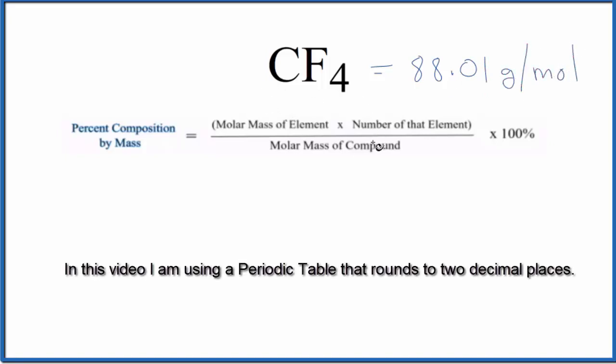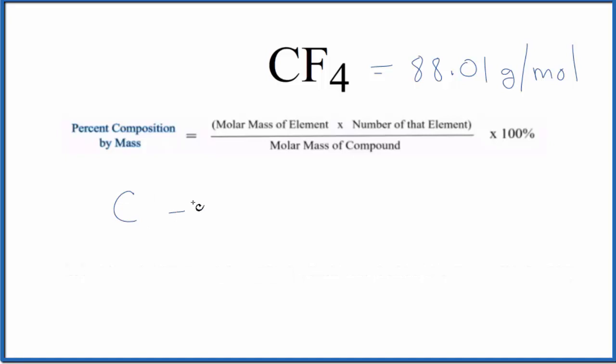Now we can figure out the percent composition by mass for each element in CF4. For carbon, we have the molar mass of the element from the periodic table, which is 12.01 grams per mole, and the number of carbon atoms is just one.